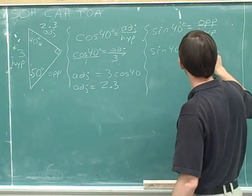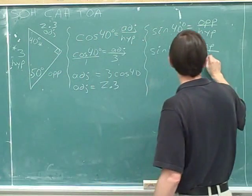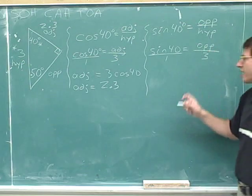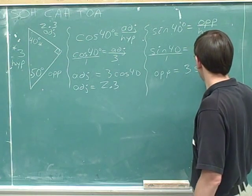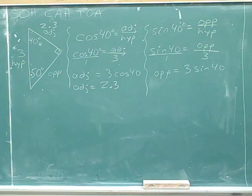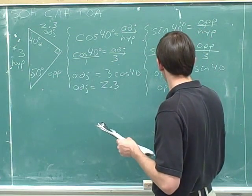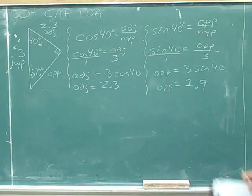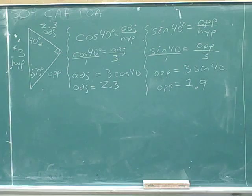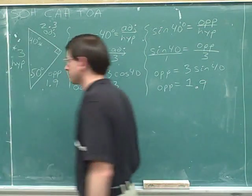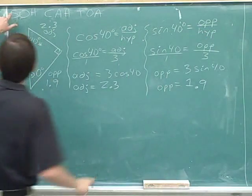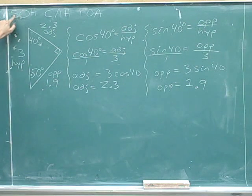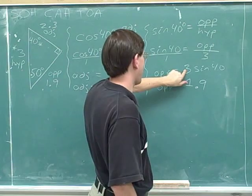The opposite side we don't know, but the hypotenuse has a length of 3. We can cross multiply: 1 times the opposite side is just the length of the opposite side, and multiplying diagonally in the other direction, we have 3 times the sine of 40. Using our calculator, 3 times the sine of 40 is 1.9. From SOH-CAH-TOA, the way to find the opposite side is to use the sine and the hypotenuse — the opposite side is the hypotenuse times the sine.